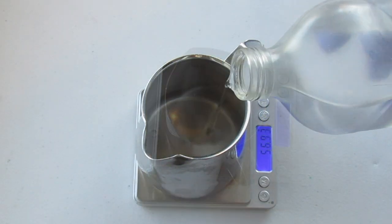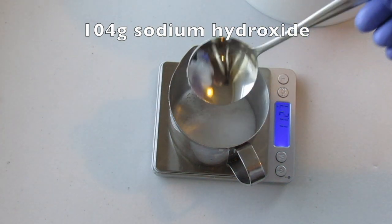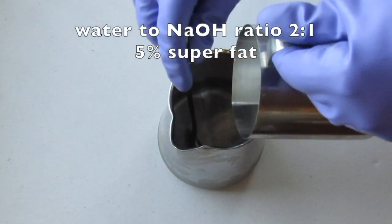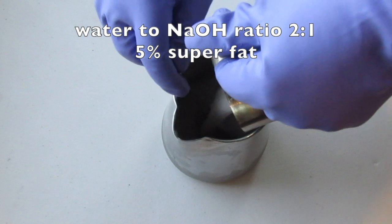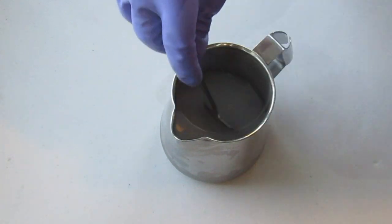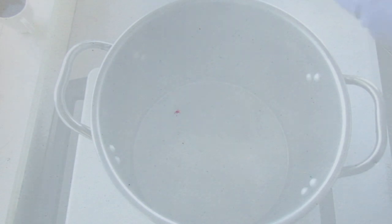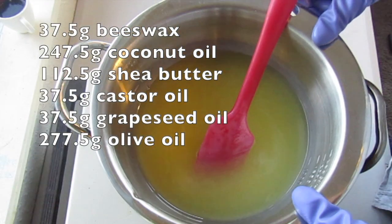Distilled water is recommended. I use rainwater that has been boiled and then chilled in the fridge. Chilling the water or using half ice and half water helps to reduce the fumes when you add the sodium hydroxide and also reduces the time it takes to cool down enough to add to the oils.